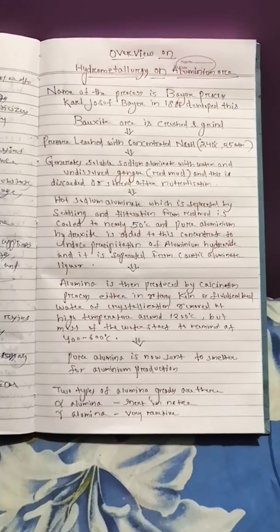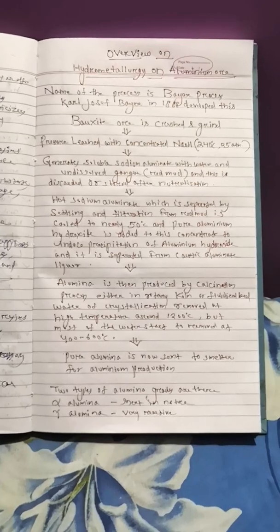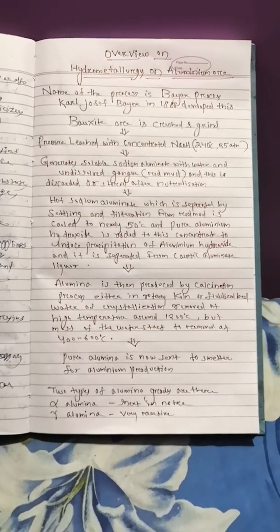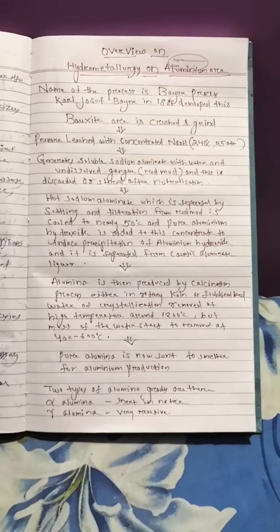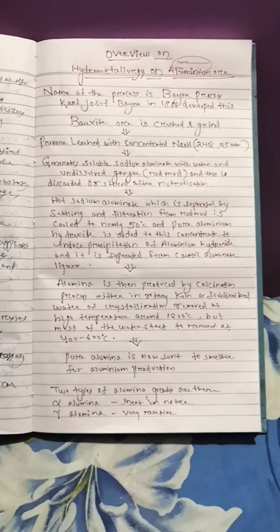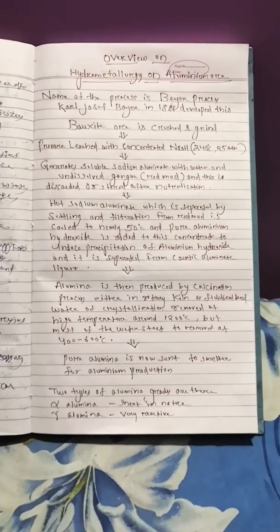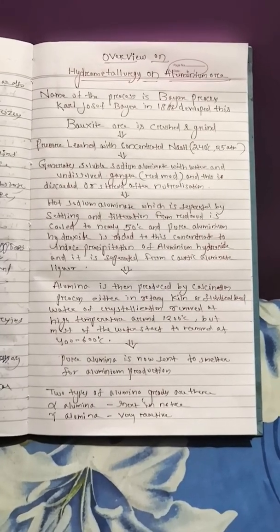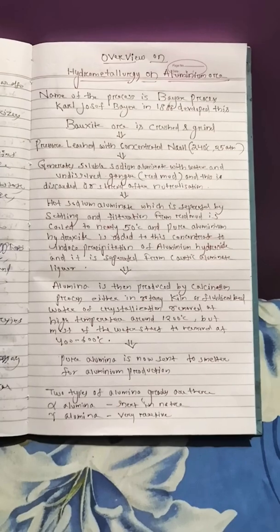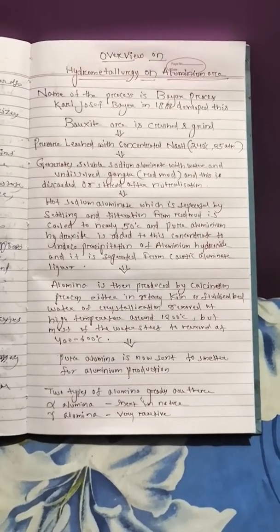The crushed and ground ore is pressure-leached with concentrated sodium hydroxide solution at 240°C and 225 atmospheres, which generates soluble sodium aluminate with water and undissolved gangue. This undissolved gangue is red mud, which is then separated and either stored after neutralizing or discarded.